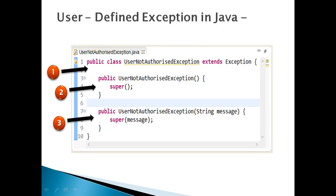Let's move ahead and discuss how to create user defined or application specific exceptions in Java. Step 1: create a class — an exception class — say UserNotAuthorizedException. Suppose we want this user defined exception to be thrown whenever a user is not authorized in an application. In order to make this class a type of exception or runtime exception, make sure it either extends Exception or RuntimeException.